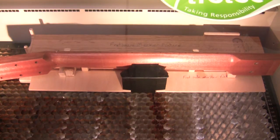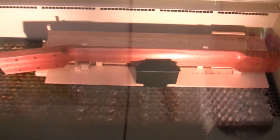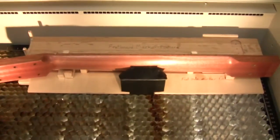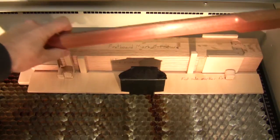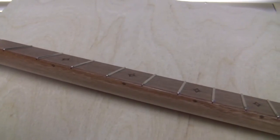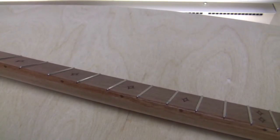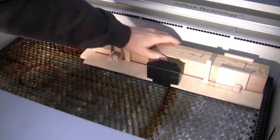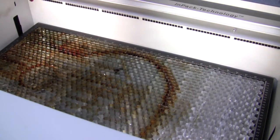So fret markers on the side of the neck. These, as I mentioned, are very useful for playing because they're easier to see than the ones in the front. There's one basically for every of the other ones except for the last one, that's in the body. Now remove that and we'll move on to the headstock logo.